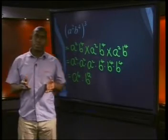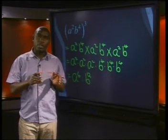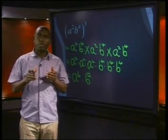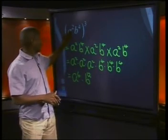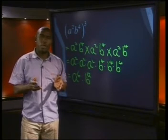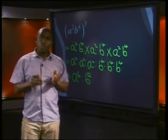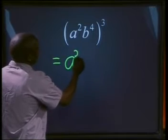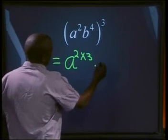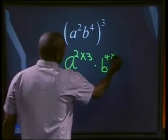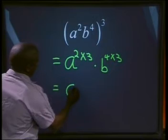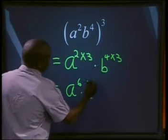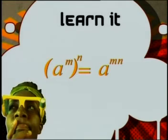Look at the answer we found. Can you suggest a shortcut for getting from the question to the answer of a to the power of 6, b to the power of 12? Can you see that each power in the brackets is raised to the power outside the brackets? When we raise a power to a power, we multiply the exponents. We could have done this example like this: a to the power of 2 multiplied by 3, times b to the power of 4 multiplied by 3, giving us a to the power of 6 times b to the power of 12. The general rule is: a to the power m, all to the power of n, equals a to the power of mn.